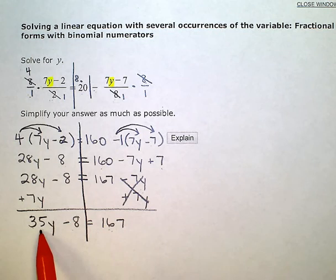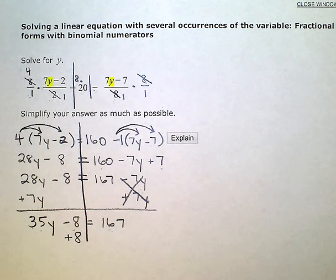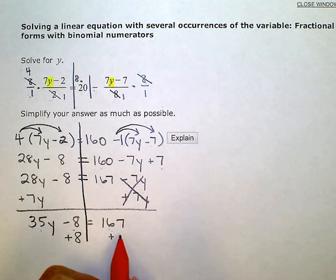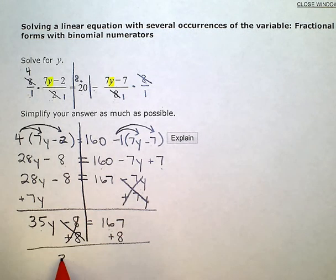Since I'm keeping variables on the left, I'm going to eliminate this constant from the left. The inverse operation is add 8 and then keep my equation balanced by adding 8 on the other side.